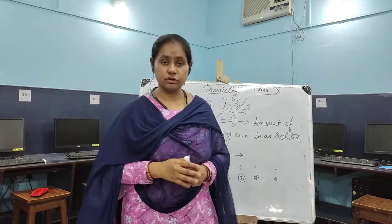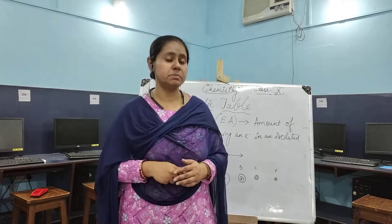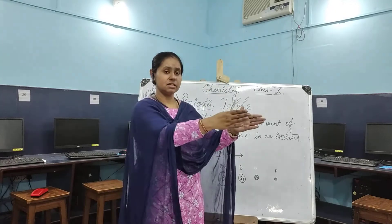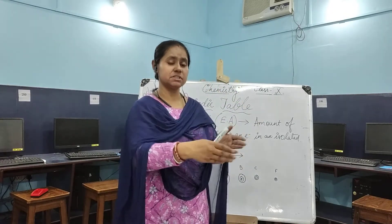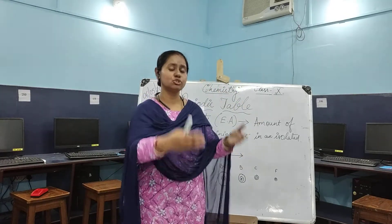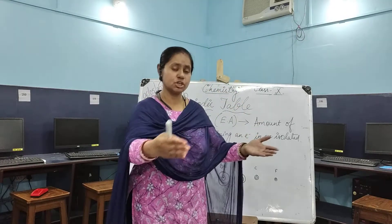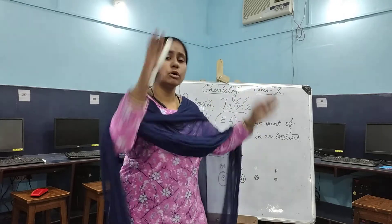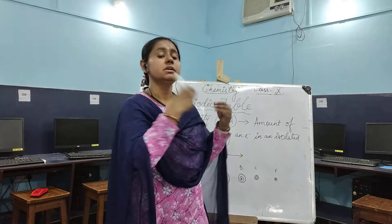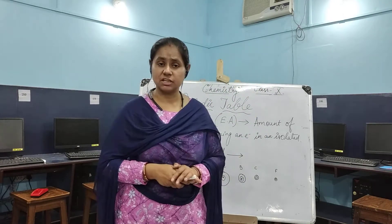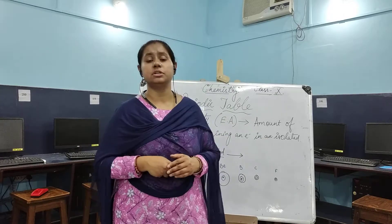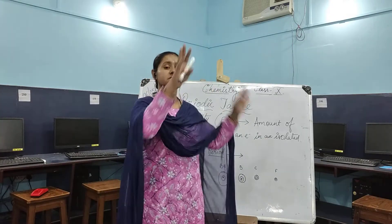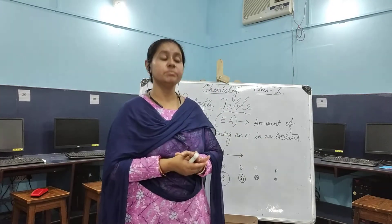I have already given you the structure of the periodic table — the alkali metals, the alkaline earth metals, the halogens, chalcogens, boron family, nitrogen family, the transition elements, the inner transition elements — all of them constitute a periodic table.